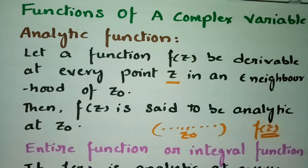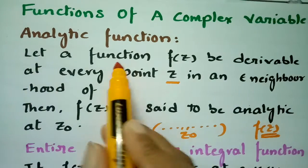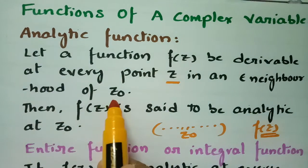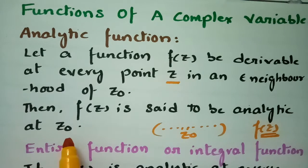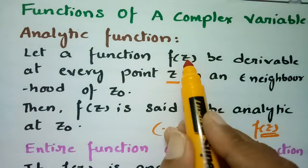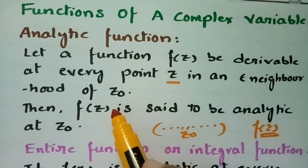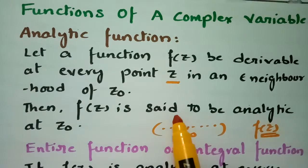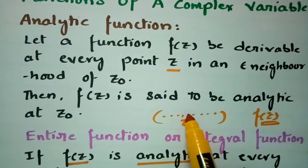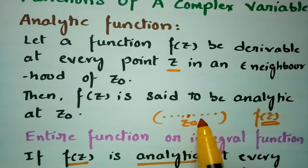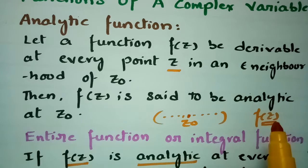First of all we have to know what is an analytic function. Let the function f(z) be derivable at every point z in the neighborhood of z-naught. Then f(z) is said to be analytic at z-naught. So if f(z) is derivable at each and every point z in the neighborhood of z-naught, then we say that f(z) is analytic.